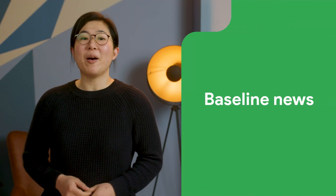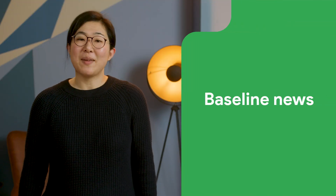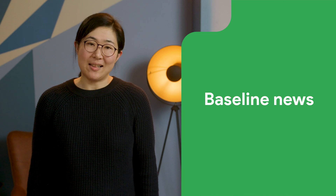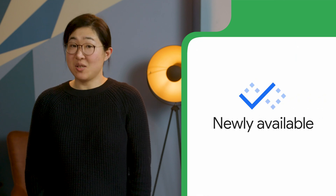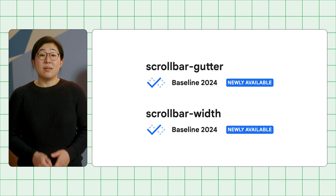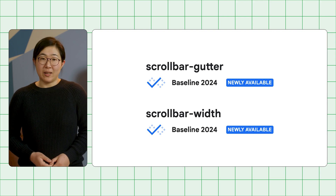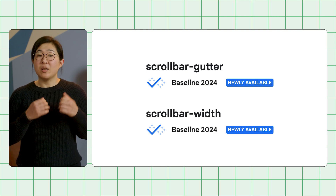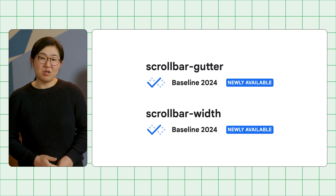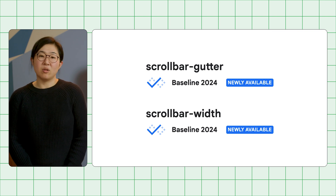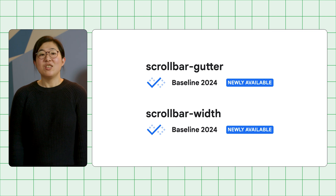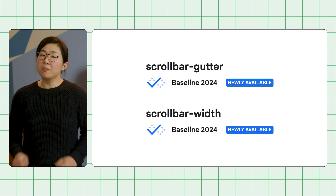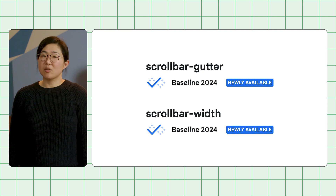And here is the news about baseline. First, baseline newly available — these are features that shipped in all four major browsers recently. With the scrollbar-gutter CSS property, you can reserve a space for the scrollbar to avoid unwanted layout changes when a scrollbar appears or disappears. With scrollbar-width, you can create a narrower scrollbar or even hide the scrollbar completely without affecting scrollability.